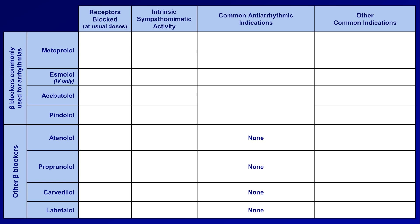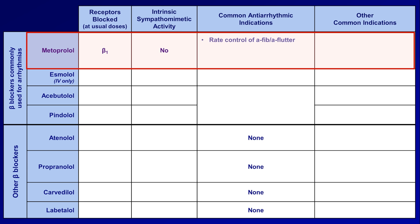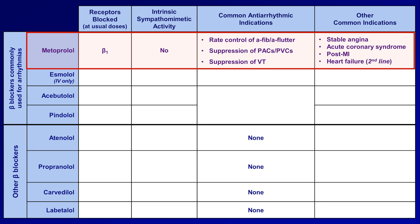For each drug, I'll list the receptors that are blocked at usual doses, mention whether or not they have intrinsic sympathomimetic activity, list their common antiarrhythmic indications if any, and their other common indications. Starting with metoprolol, it is cardioselective, so predominantly active only on beta-1 receptors, with no intrinsic sympathomimetic activity. Metoprolol is the most common beta-blocker prescribed as an antiarrhythmic. Its indications include rate control of AFib and AFlutter, as well as suppression of premature atrial and ventricular contractions, and suppression of VT. Metoprolol has many other non-antiarrhythmic indications, including stable angina, acute coronary syndrome, and it's routinely prescribed post-MI. The extended-release formulation, called metoprolol succinate, is the second-line beta-blocker choice for treating patients with systolic heart failure, also known as heart failure with reduced ejection fraction.